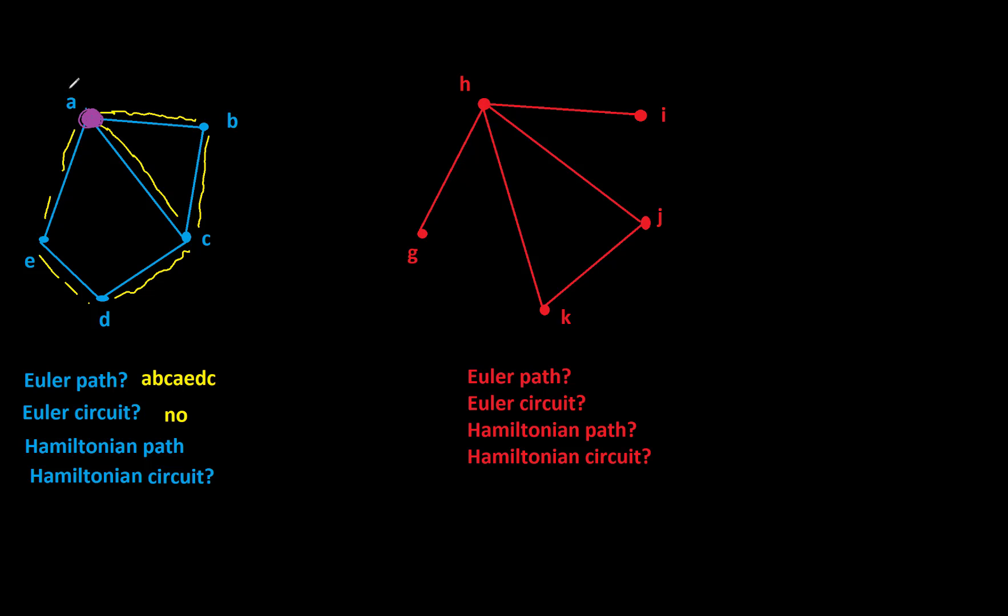All right, so I visited vertex A. Then I'll go traveling along. I'll visit vertex B. Travel along this edge. Hit C. I don't want to go across the middle here because then I'll bump into A and I've already been there. So let's keep going around the perimeter. I'll hit D. And then lastly, I can hit E.